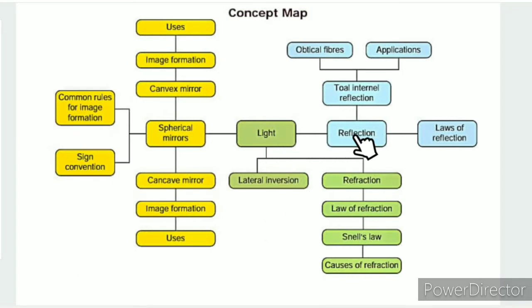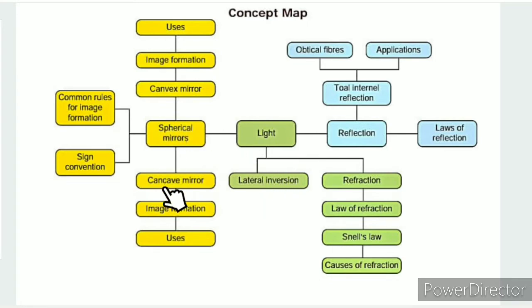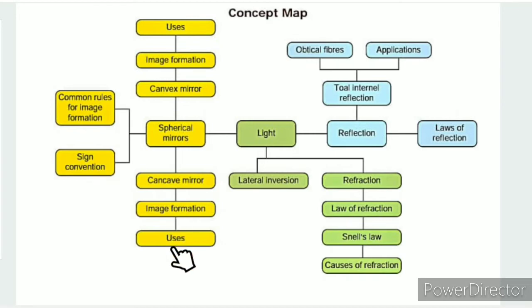In the topic overview for Light, we have covered: reflection, laws of reflection, lateral inversion, ambulance text, and spherical mirrors — two types: concave mirror and convex mirror — and image formation.